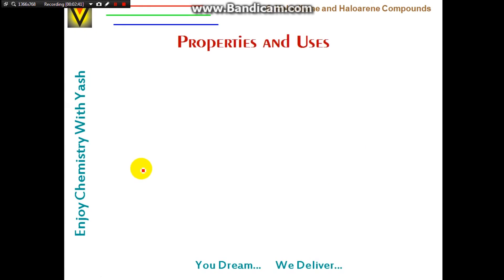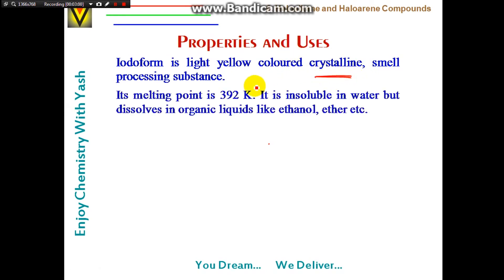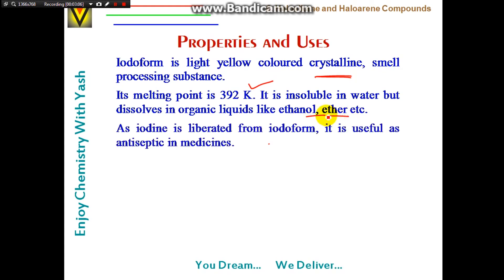Iodoform is a light yellow colored crystalline solid with a characteristic smell — notably the first solid compound in this series. Its melting point is 392 K. It is insoluble in water but dissolves in organic solvents like ethanol and ether. As iodine is liberated from iodoform, it is useful as an antiseptic medicine.